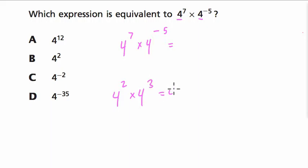What would this equal? Well, 4 squared is 4 times 4, and then we're multiplying that by 4 times 4 times 4, 3 4s. So, we can think of it as 2 4s being multiplied by 3 4s, or we can use the associative property and put them all together in one big group.